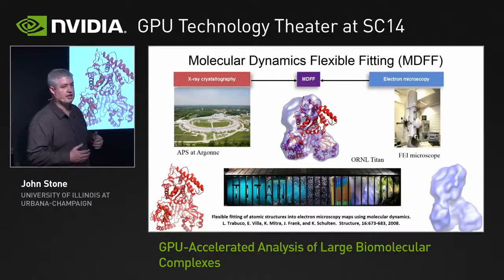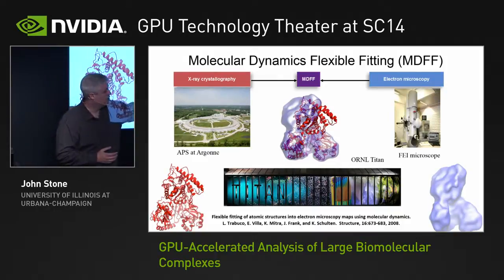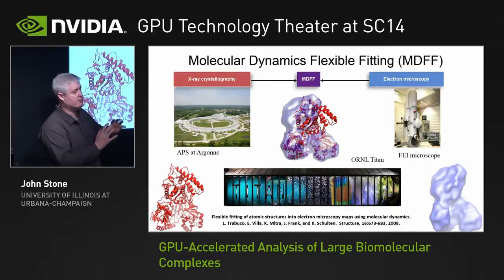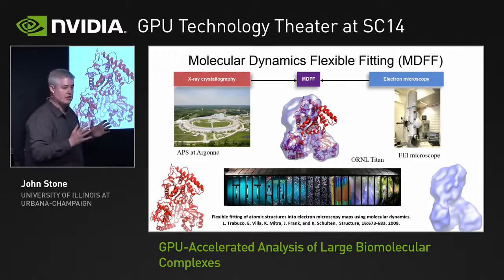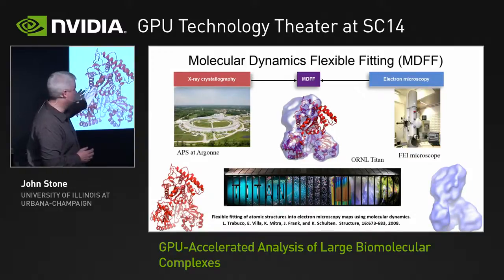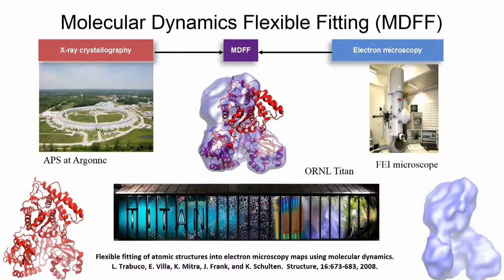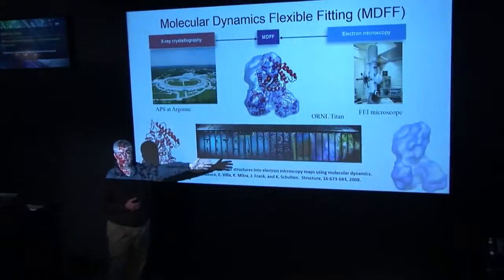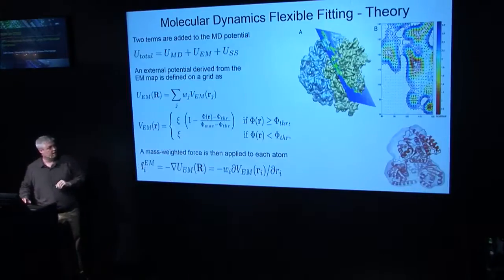One particularly interesting technique is what we call molecular dynamics flexible fitting. It takes very high resolution X-ray crystallography structures and combines them with low resolution but faithfully represented shapes from cryo-electron microscopy. The problem with crystallography is that to get all-atom detail, you have to turn a protein into a crystal, which deforms it. By combining both imaging types with simulation, we take the physiologically correct but low-resolution cryo-EM image and combine it with the all-atom crystal structure to get an all-atom structure faithful to the original biological scenario.